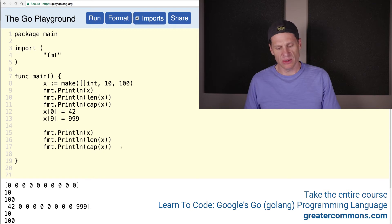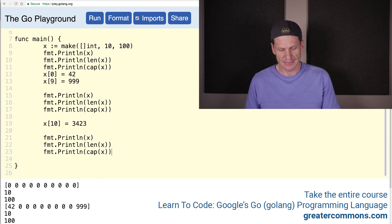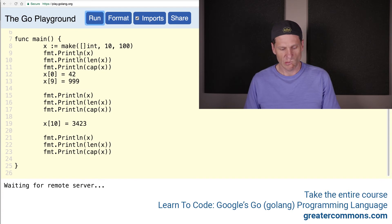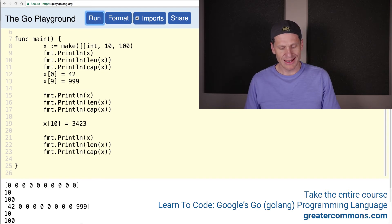Now what we can't do is we can't do this. x[10], right? Because this is at position 11. Because 10 goes through position 9. So we can't store value there. Because we haven't said, hey, this is part of our slice. So if we put something there, it's not going to work. We're going to get an error. Index out of range, right? We tried to put something in an index position which was out of range.